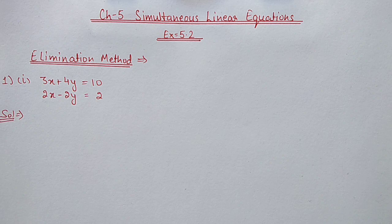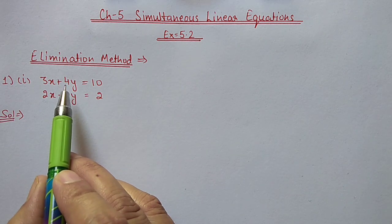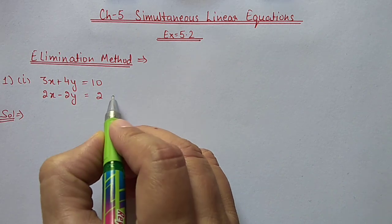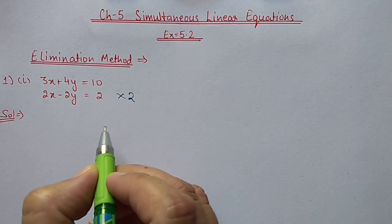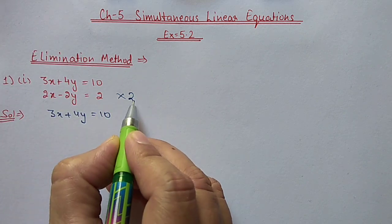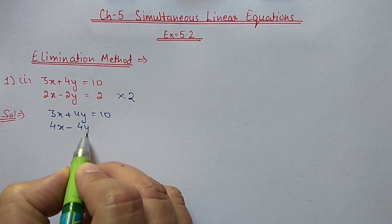First question: we have 3x plus 4y equal to 10 and 2x minus 2y equal to 2. We have x and y, two variables here. First of all we have to make the coefficient of any one variable the same. For y we have 4y here. If I multiply the second equation with 2, then it will also become 4y. So I am multiplying the second equation with 2. First equation: 3x plus 4y equal to 10. Second equation after multiplication with 2 becomes 4x minus 4y equal to 4.